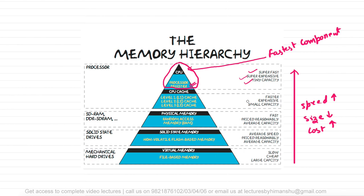The processor registers are super fast, super expensive, and very tiny in terms of storage — they store just some bytes, not even kilobytes. The second component close to the CPU is cache memory. Cache memory is fast, expensive, and small in capacity. The L1 cache is around 512 KB, the L2 cache around 2 to 3 MB, and the L3 cache around 6 to 12 MB. Cache memory is slower than registers but faster than main memory.